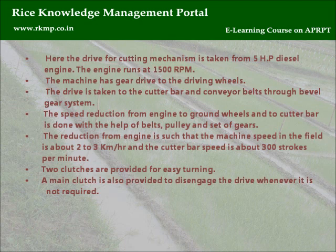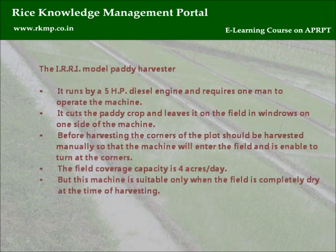The machine has gear drive to the driving wheels, with drive taken to the cutter bar and conveyor belts through a bevel gear system. Speed reduction from engine to ground wheels and cutter bar is done with belts, pulleys, and a set of gears, such that the machine speed in the field is about 2 to 3 km per hour and the cutter bar speed is about 300 strokes per minute. Two clutches are provided for easy turning, and a main clutch disengages the drive when not required. The IRRI model paddy harvester runs on a 5 HP diesel engine, requires one operator, cuts the paddy crop, and leaves it in windrows on one side. Before harvesting, corners of the plot should be harvested manually so the machine can enter the field and turn at corners.